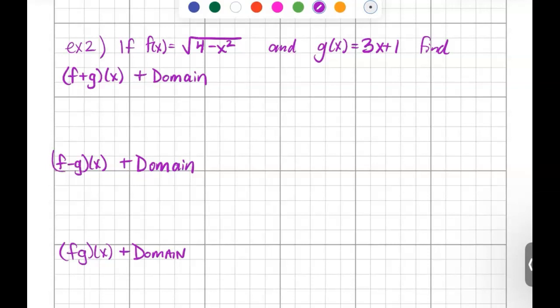If f of x equals the square root of 4 minus x squared, and g of x equals 3x plus 1, find the following. This first one is asking us to add the two functions together. This notation may look confusing. You may recognize it as f of x plus g of x. These mean the same thing.